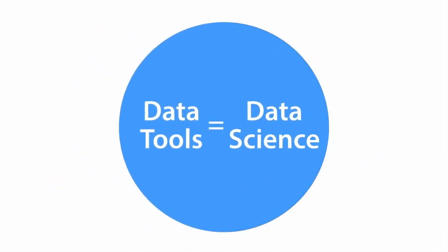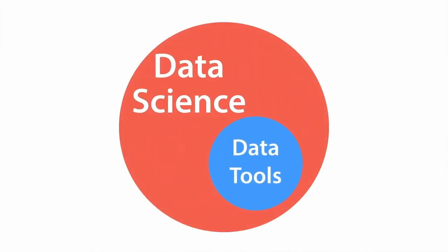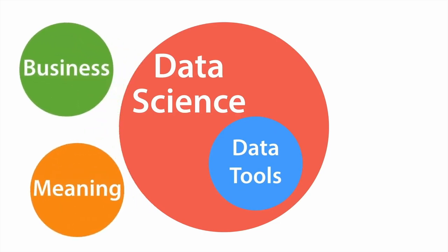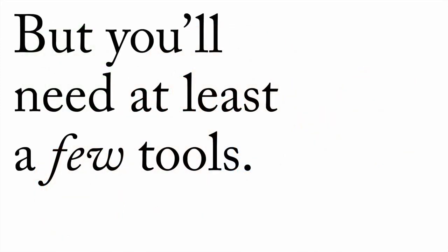If you look at it for just a second, that's not really the case. Data tools are simply one element of data science, because data science is made of a lot more than the tools you use. It includes things like business knowledge, meaning-making and interpretation, and social factors. So there's much more than just the tools involved. That being said, you will need at least a few tools, and so we're going to talk about some of the things you can use in data science.